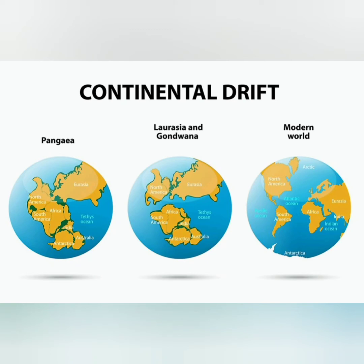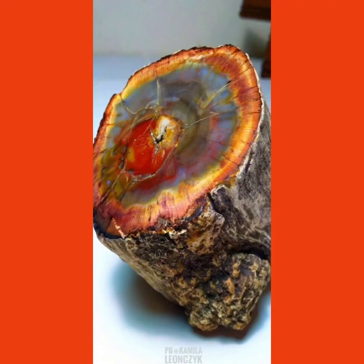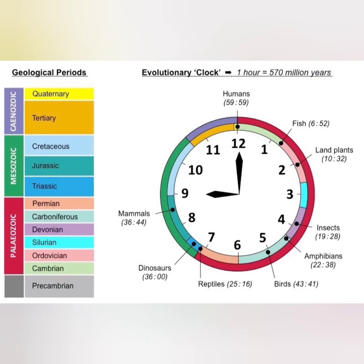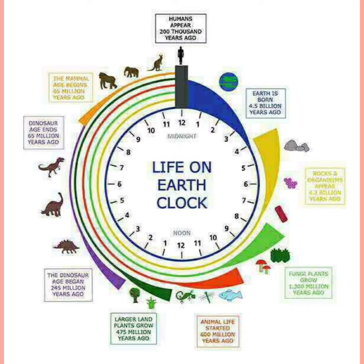Here is an interesting analogy — reading the geological time scale as a calendar. Geological time began ticking when Earth formed 4.6 billion years ago. Scaling this to a calendar year, each of the 12 months represents 383 million years. Each day represents 12.6 million years. Each hour represents approximately 525,000 geological years. Each minute represents 8,752 geological years.